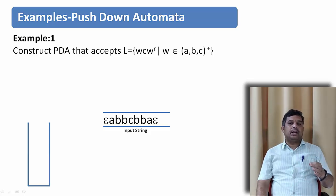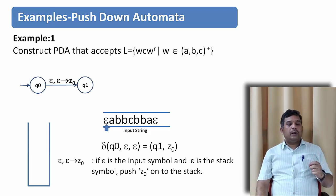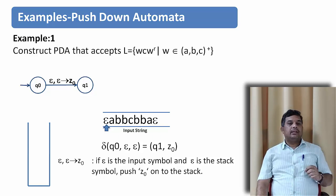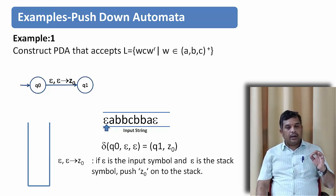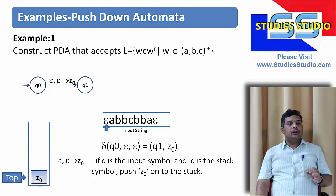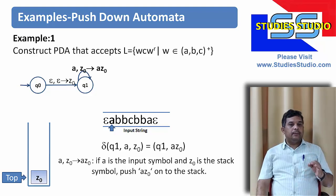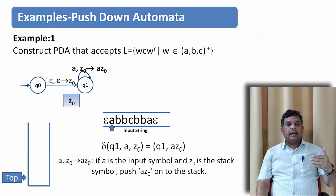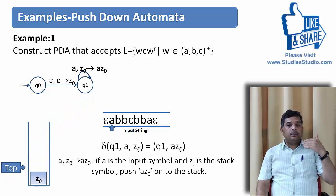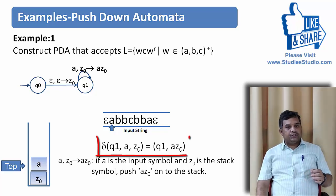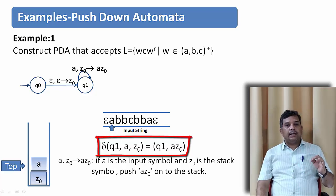When the first epsilon appears, we are at state Q0 and we go to state Q1. The labeled arc contains epsilon, epsilon → Z0. This means the transition is: we are at Q0, input symbol is epsilon, stack symbol is epsilon, so we go to state Q1 and push Z0 onto the stack. The next input symbol is a. We are at state Q1, input symbol is a, and Z0 is at the top of the stack. We pop Z0, push the same Z0 back, and then push the input symbol a. So the transition is: δ(Q1, a, Z0) = (Q1, a Z0).